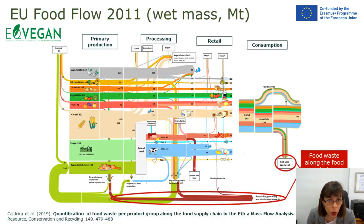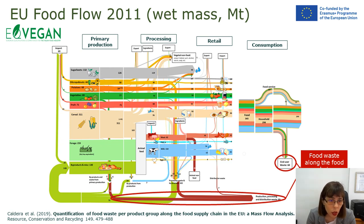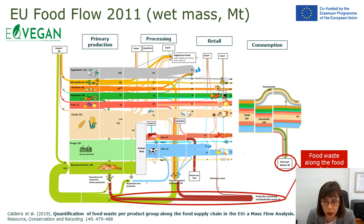For food flow, we can see different parts of food production and quantify food waste per product group along the food supply chain in the European Union, covering primary production, processing, retail and consumption. We monitor food waste for categories such as sugar beets, oil crops and nuts, potatoes, vegetables, fruit, and cereals. By-products also need to be reduced, recycled and reused. Food waste along the food chain totals 129 megatons.